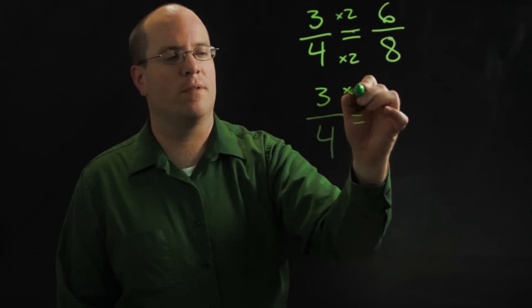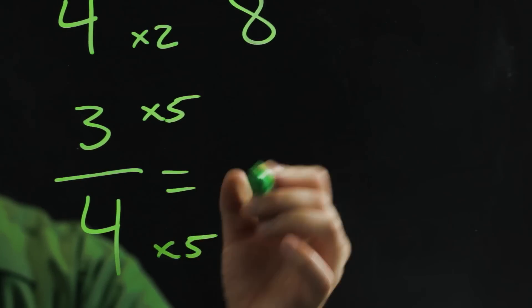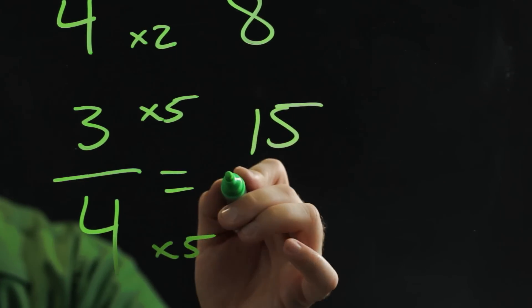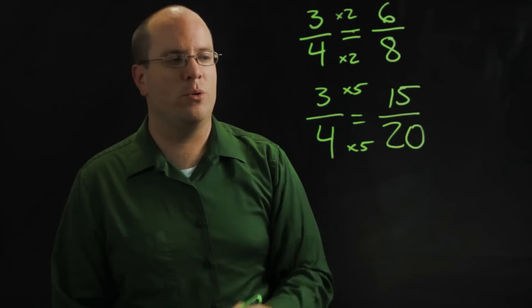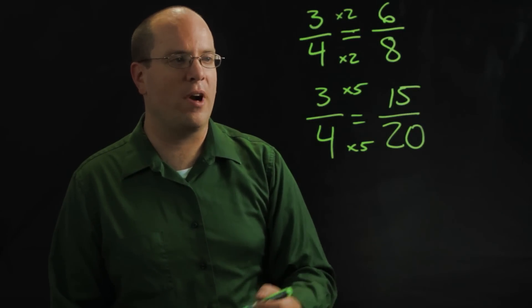I can do times five. And I'll have fifteen over four times five is twenty. So that's two different ways you can work on equivalent fractions.